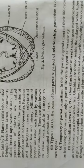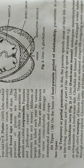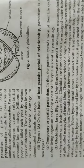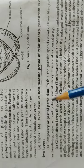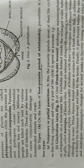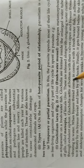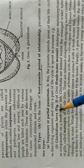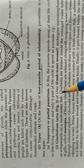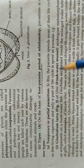On the basis of the period and nature of the relationship between host and parasite, we have temporary or partial parasitism, where the parasitism occurs only for a short period. A very important example of this is the glochidium larva of Unio. Unio is a freshwater mussel that you have studied in your first year.